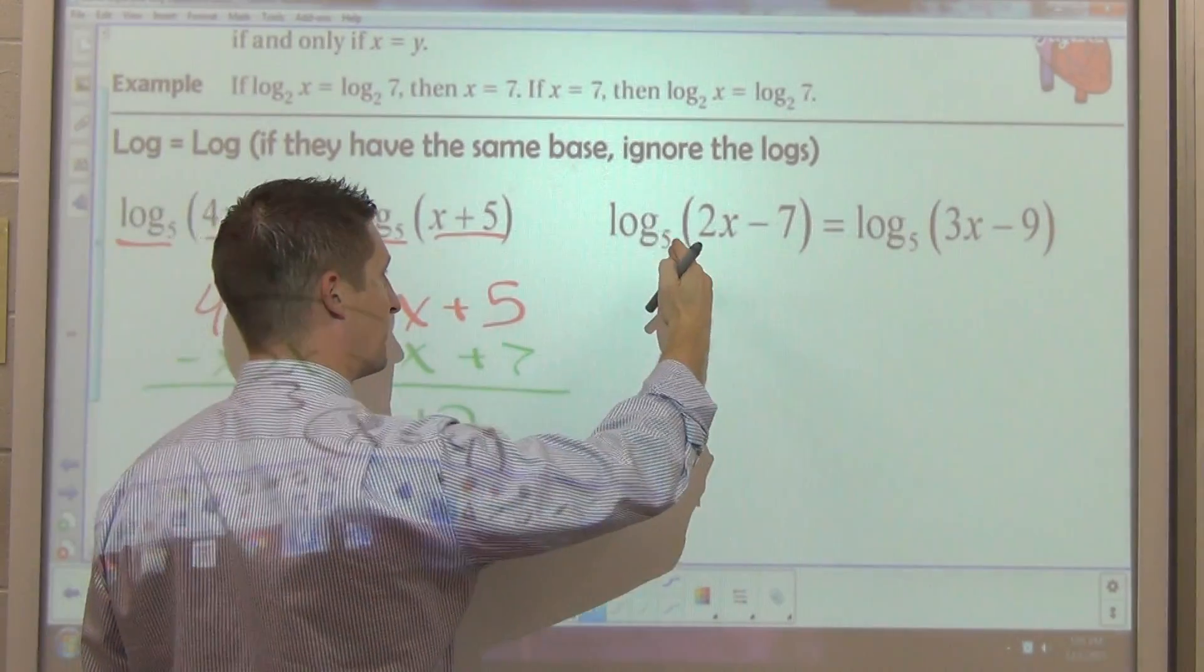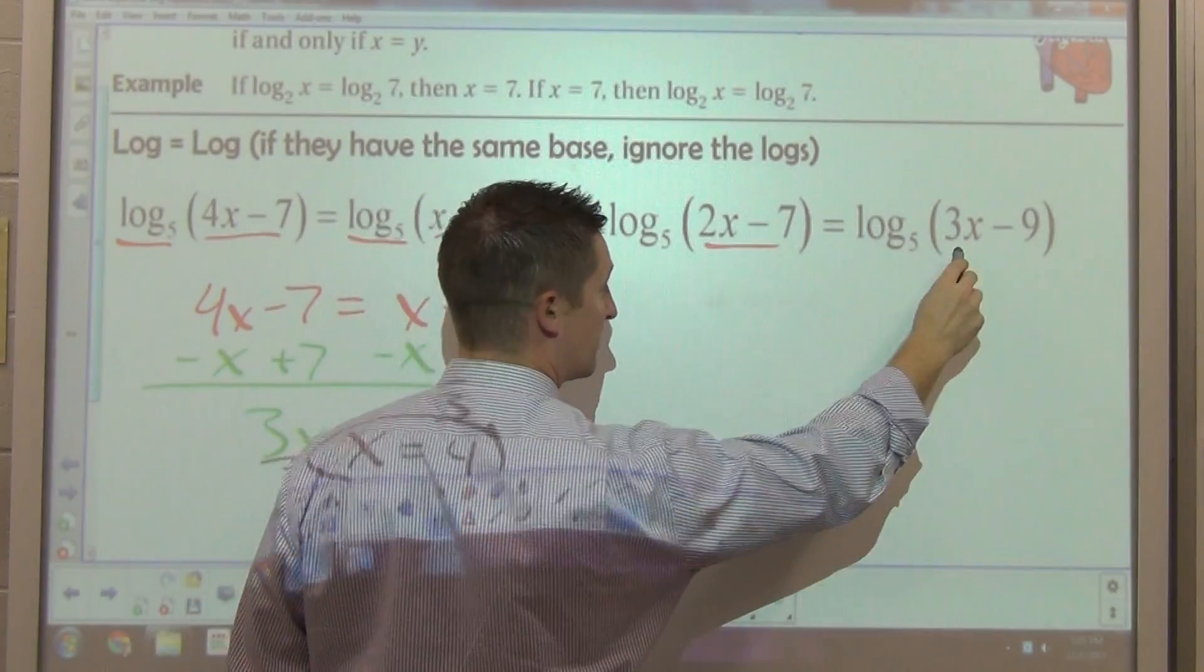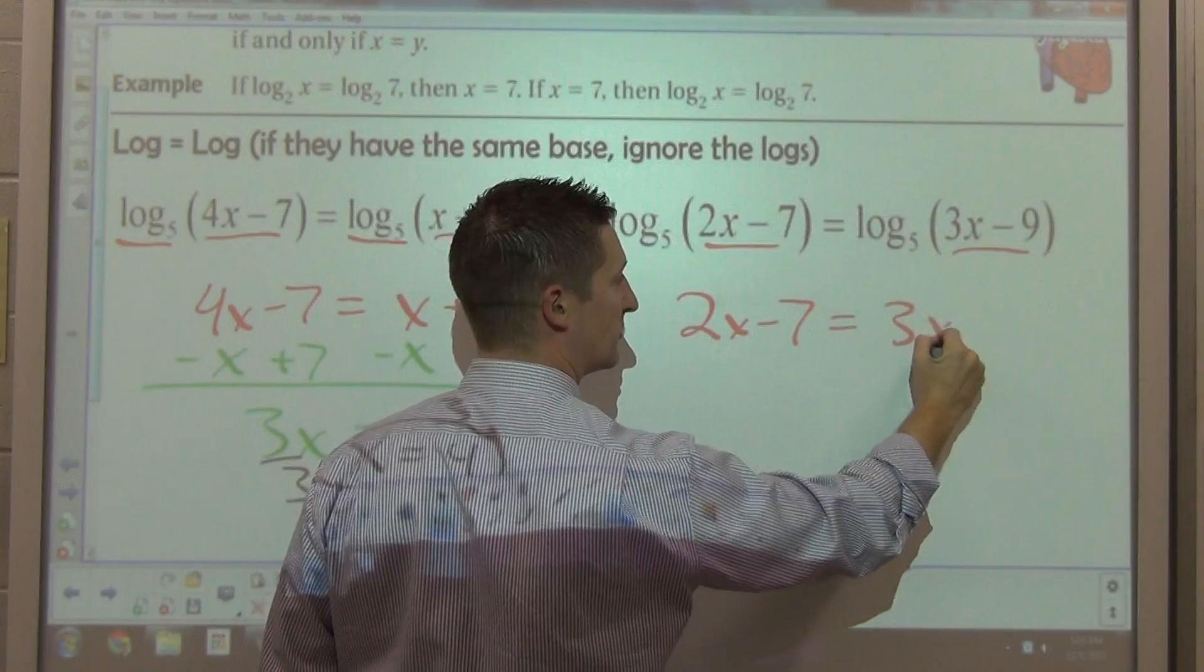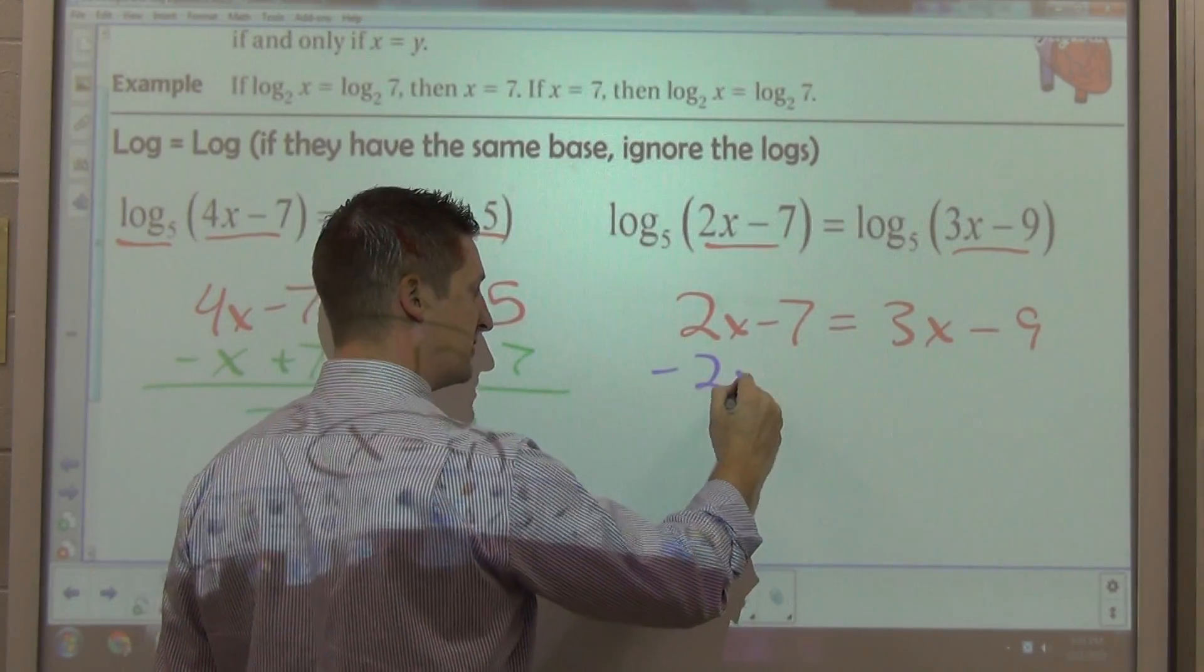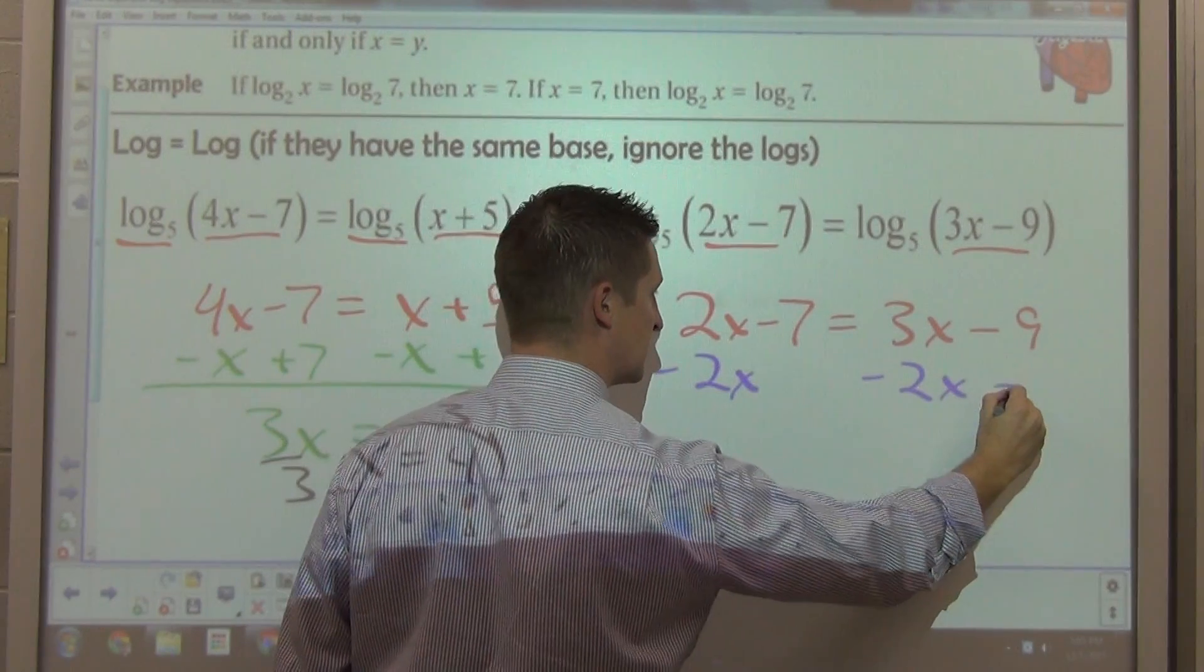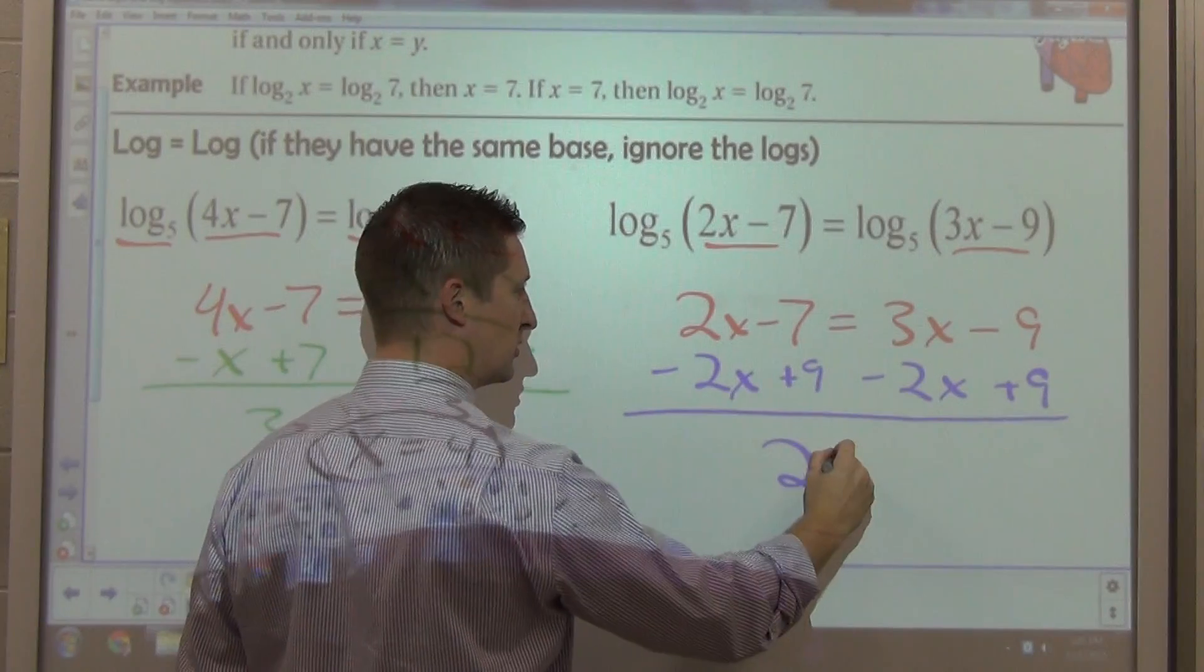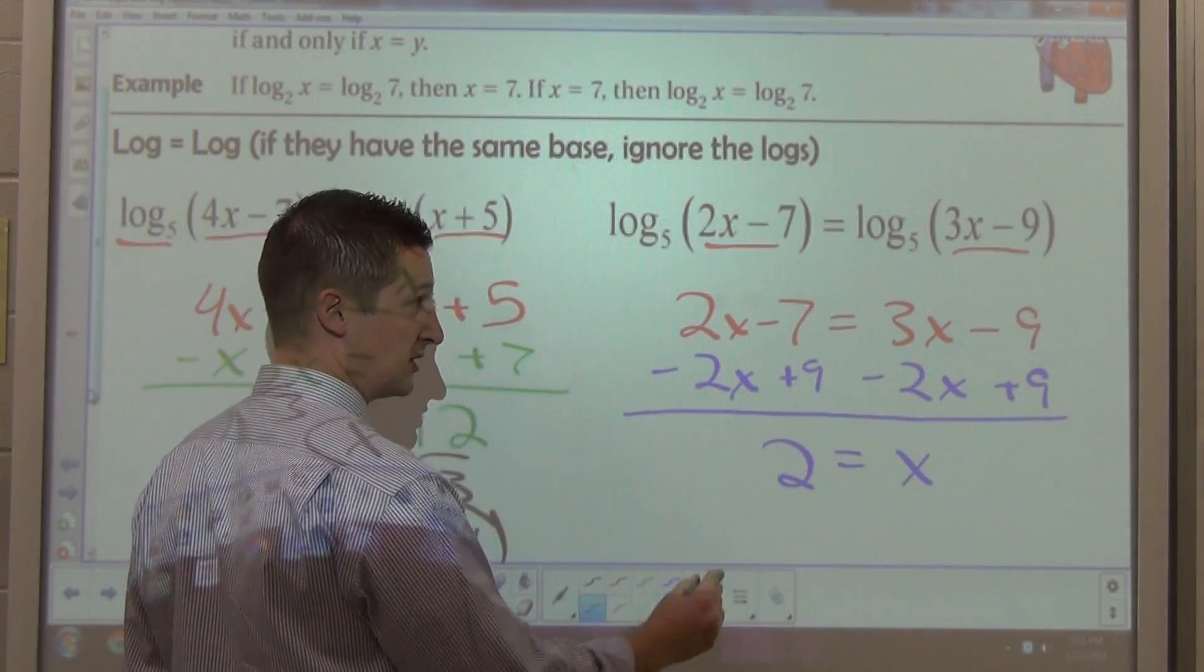This next example, same thing, log base 5 on both sides, so I can ignore the log or let me just worry about what's inside. Take 2x minus 7 and set it equal to 3x minus 9. As I solve for x, I'd probably subtract 2x from both sides and add 9 to both sides. To get the constants together over here, well, that equals 2, and this side equals just x, so that's convenient. So x is equal to 2.